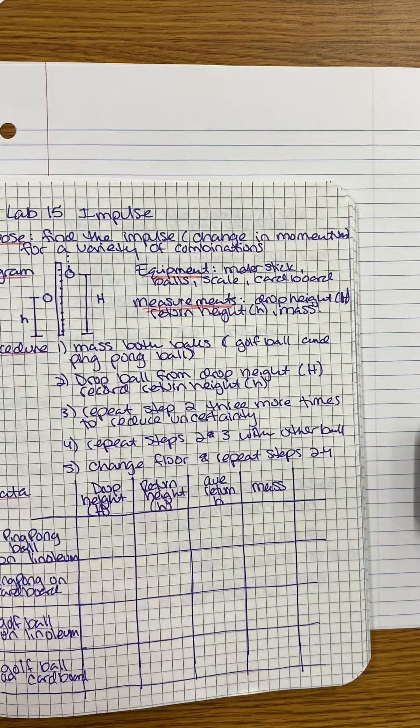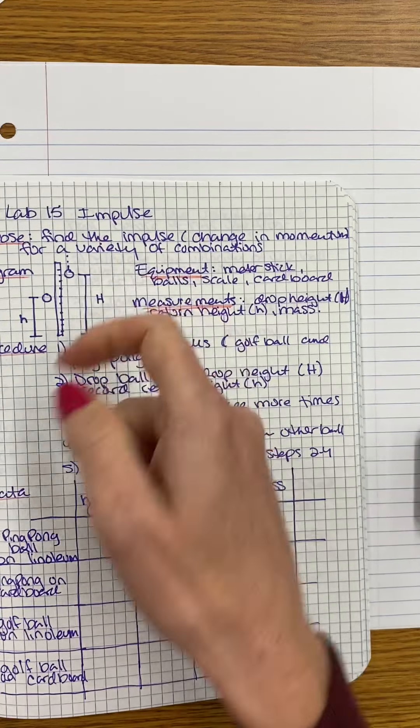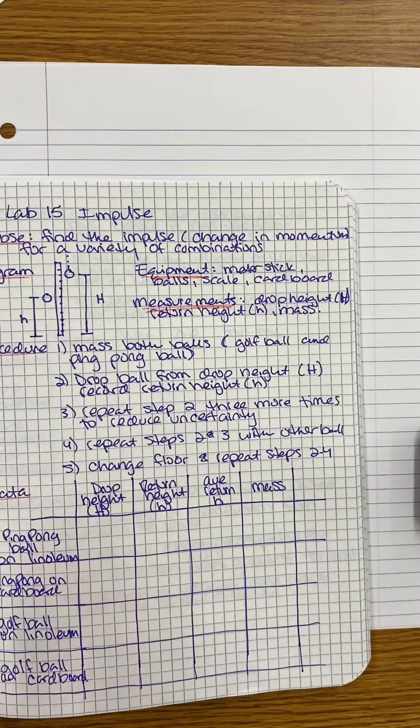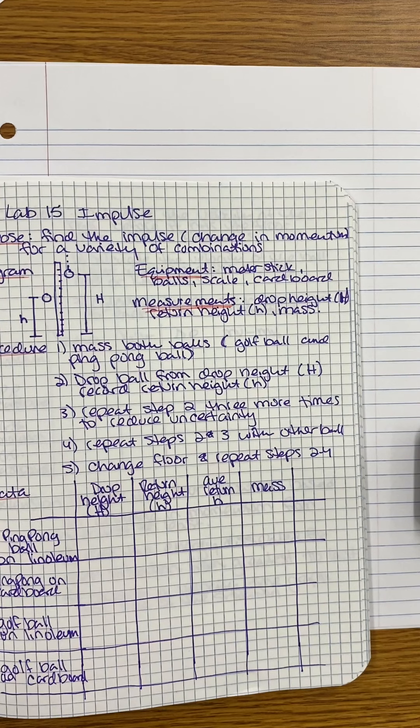This is my diagram. I identified the height that I dropped it at and the height that it returned to because those are the two variables, big H and little h, that I'm going to use in my calculations.